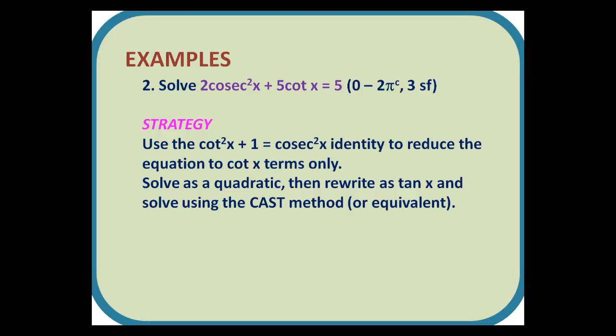Number 2. Solve 2cosec²x + 5cot x = 5 between 0 to 2π radians, giving our answers to three significant figures. Strategy: Use the cot²x + 1 = cosec²x identity to reduce the equation to cot x terms only. Solve as a quadratic, then rewrite as tan x and solve using the CAST method or equivalent.